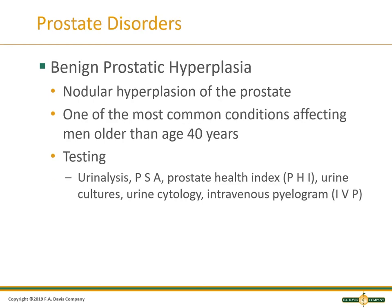Benign prostatic hyperplasia is the most common condition, usually occurring over the age of 40. Workup includes urinalysis, PSA, urine cultures, and urine cytology to rule out other causes — urine cytology specifically looks for cancer cells.